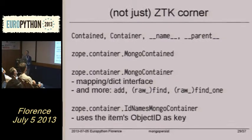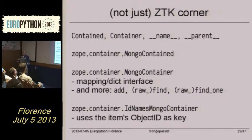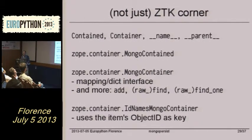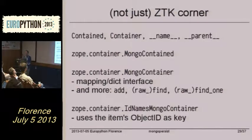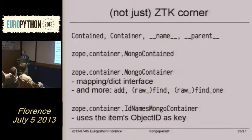It's very important to have __name__ and __parent__ because of security and such. MongoContained is the counterpart of the ZTK contained class, and it has to work quite hard on setting the __name__ and __parent__ properties. __parent__ shouldn't be stored in the database because it might cause circular references, but it's still needed to have a neatly working security system with ZTK.